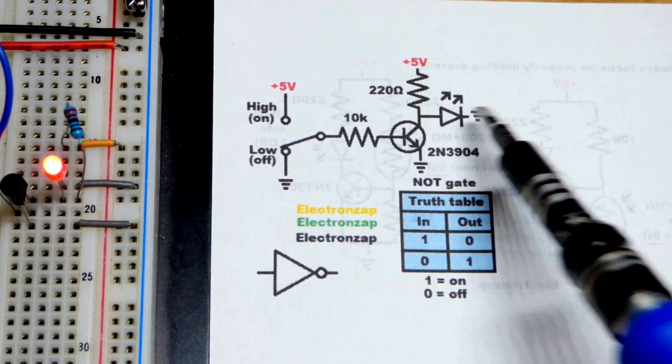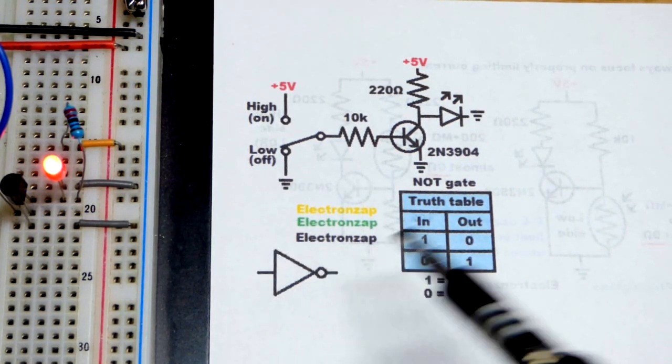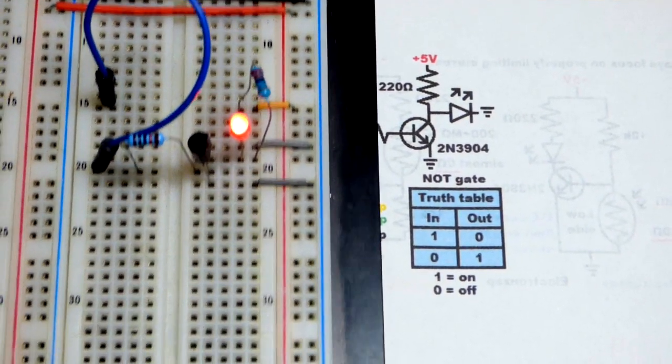The LED is at our output right there. Here is the schematic symbol for the NOT gate. Let's look at it on the board really quick.